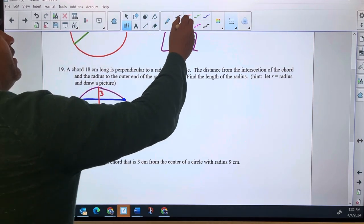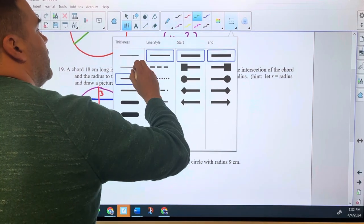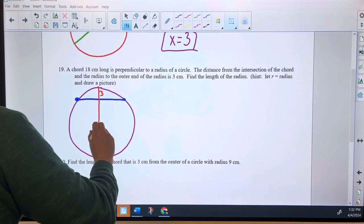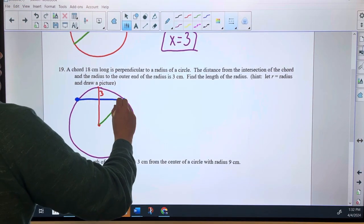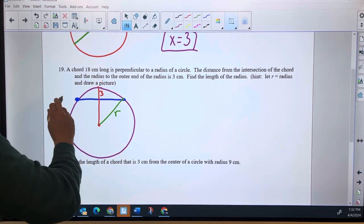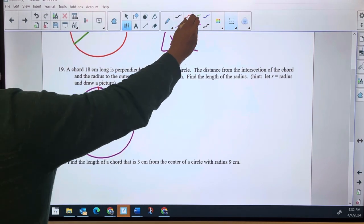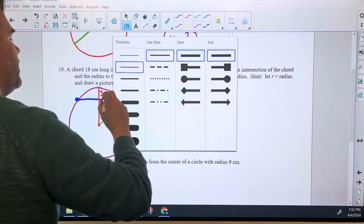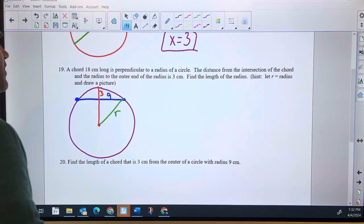Draw a picture. Done. I'm going to give myself one more piece of this picture. Throw one more right here and I'm going to call that R. Since I know this chord is 18, I actually know that this piece of it is nine.